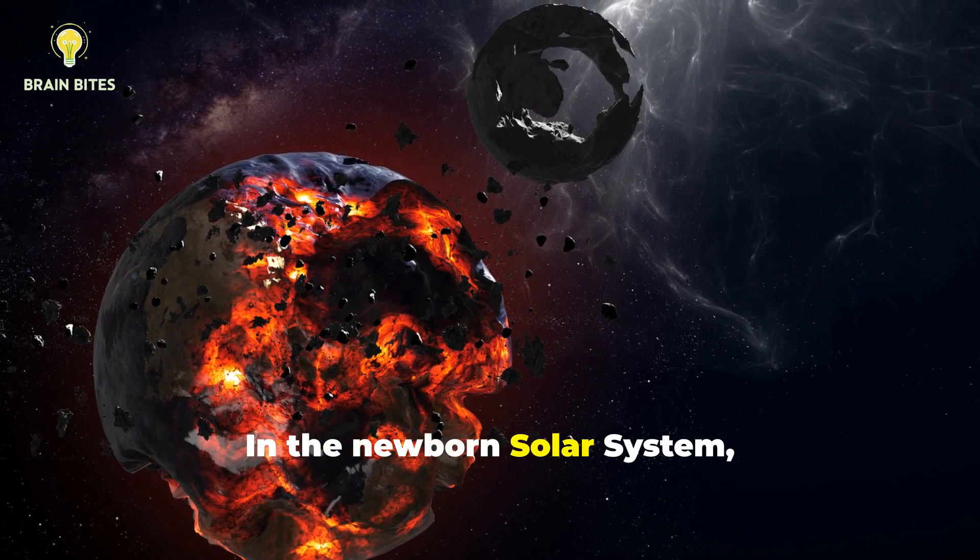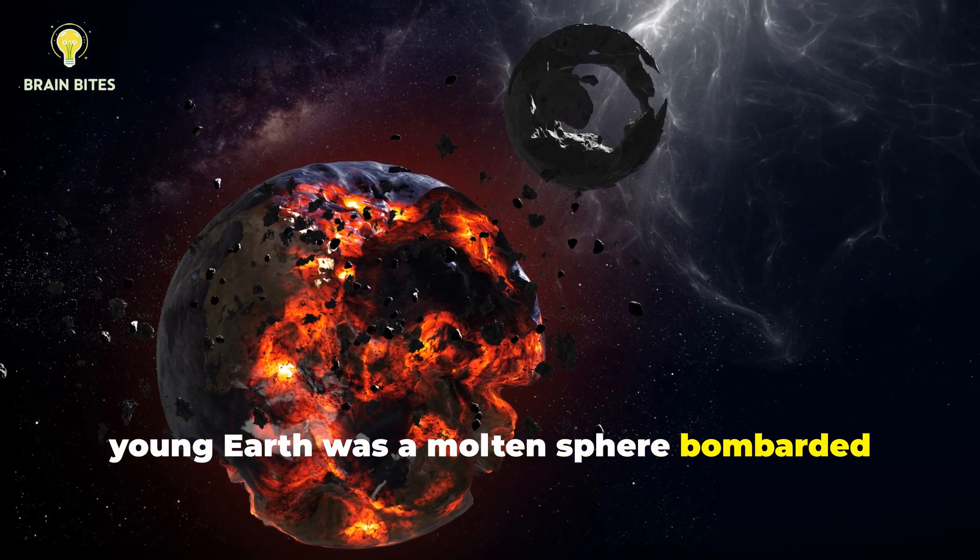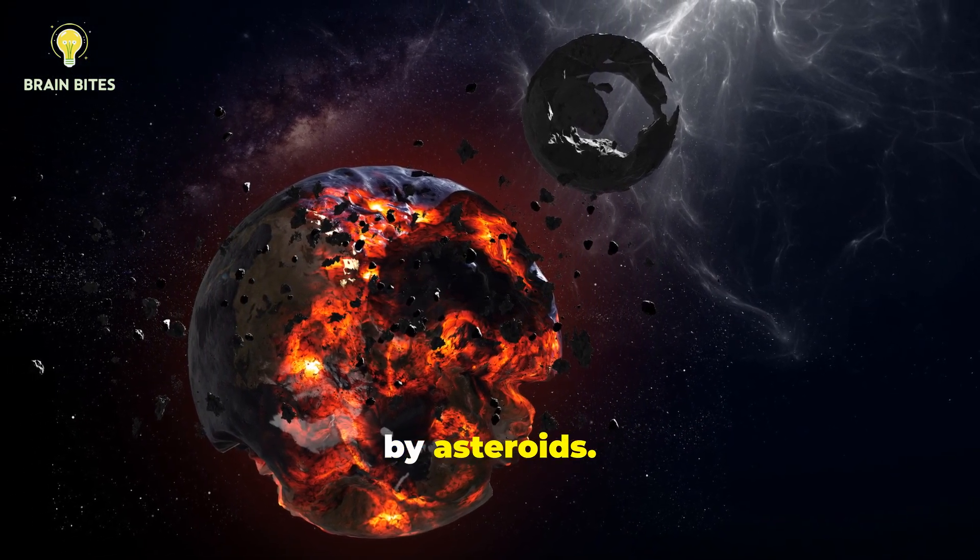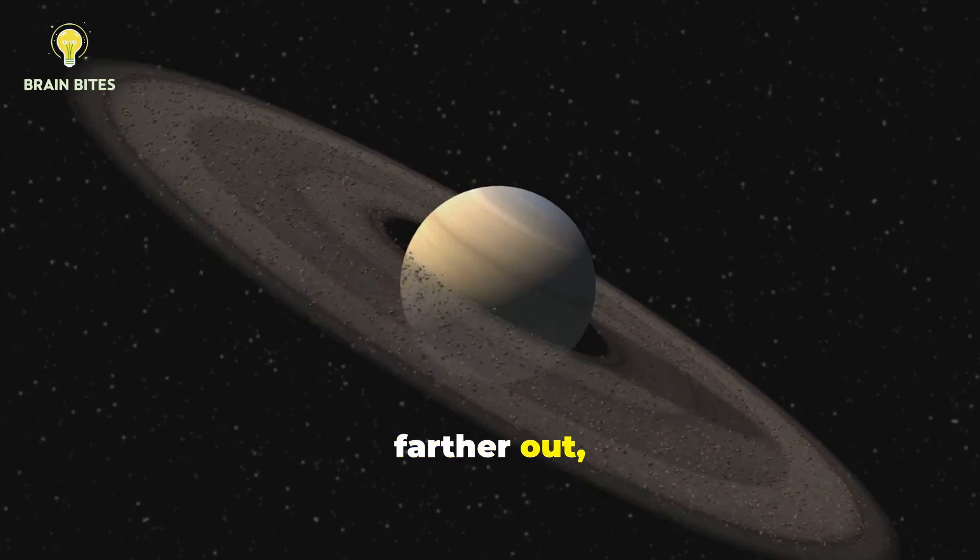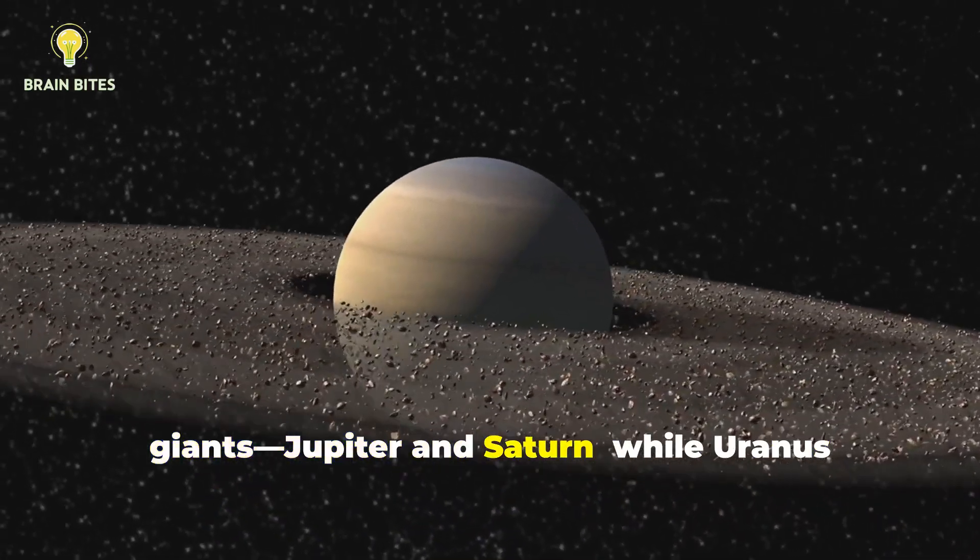In the newborn solar system, young Earth was a molten sphere bombarded by asteroids. Meanwhile, farther out, lighter elements and ices formed the gas giants, Jupiter and Saturn.